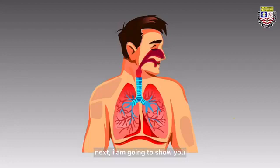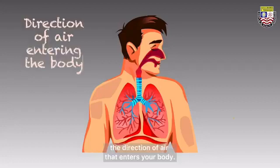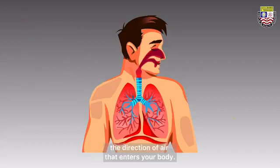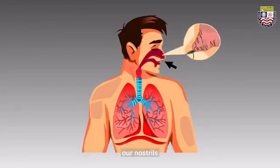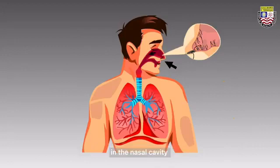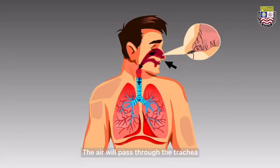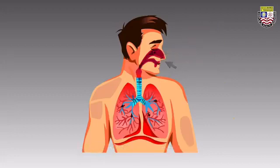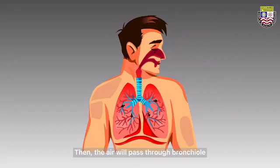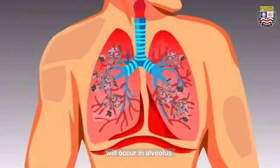Next, I'm going to show you the direction of air that enters your body. When we inhale, the dust particles going into our nostrils will be trapped by the mucus and tiny hairs in the nasal cavity, so that dust particles will not enter your lungs. The air will pass through the trachea, which branches out into two bronchi at the end. Then the air will pass through the bronchioles, and gaseous exchange will occur in the alveolus.